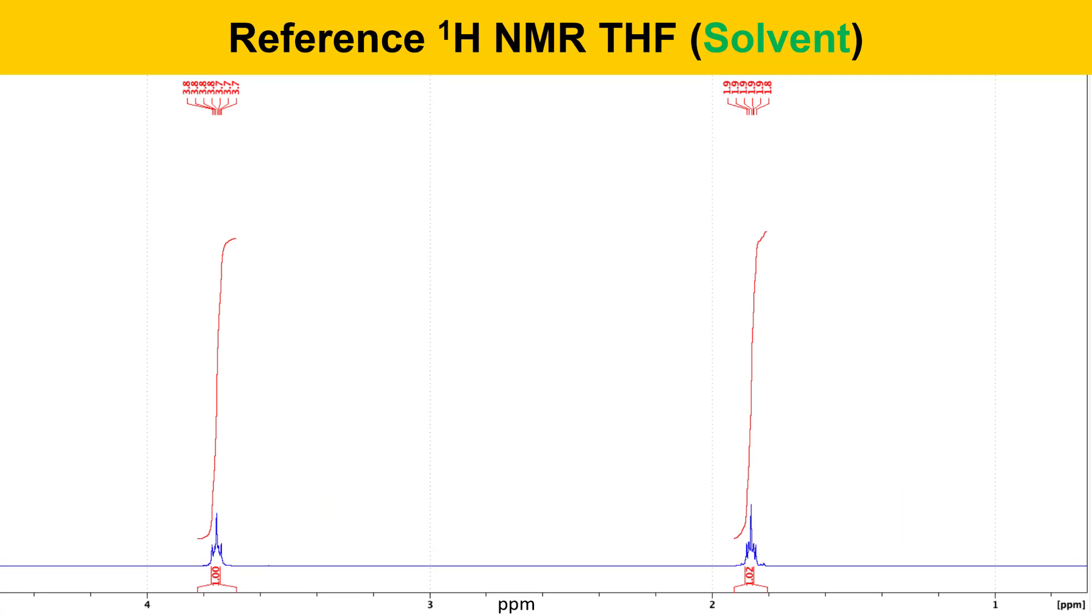Here's a reference proton NMR spectrum of the solvent THF, and here are its peak assignments. The two signals for THF are complicated and are what we call second-order multiplets, which means that you can't figure out their splitting using the n plus 1 rule. The reasons for this are complicated and beyond the scope of this class. For this experiment, it's enough to know their location and their appearance, and that they're distinctive for THF.